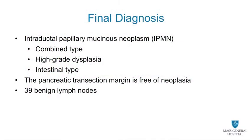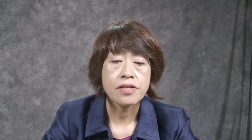In summary, the resected pancreas exhibits IPMN of intestinal type with high-grade dysplasia involving both main and branch ducts. A thorough examination of the specimen confirms no invasive carcinoma. The tumor is completely removed and no metastasis is identified in 39 examined lymph nodes. The lack of invasive carcinoma and or metastasis and complete resection of the tumor likely indicates a favorable outcome for the patient.